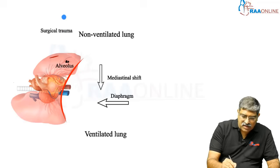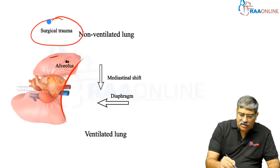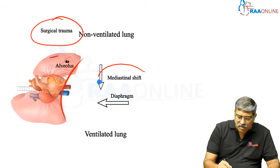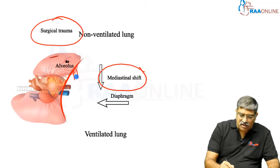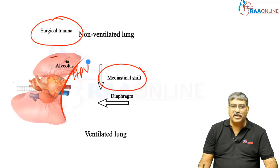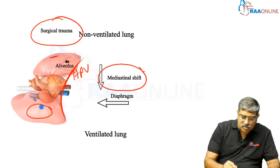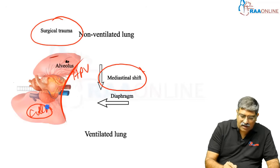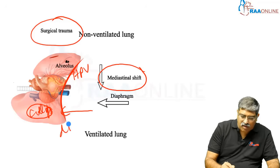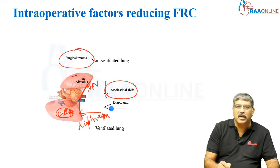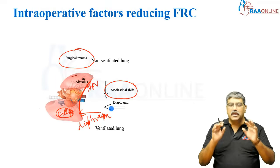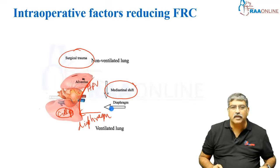So the factors reducing FRC are: first, surgical trauma; second, mediastinal shift; third, hypoxic pulmonary vasoconstriction; fourth, collapsed lung; and finally diaphragm pushing. All these factors reduce the FRC of the dependent lung.